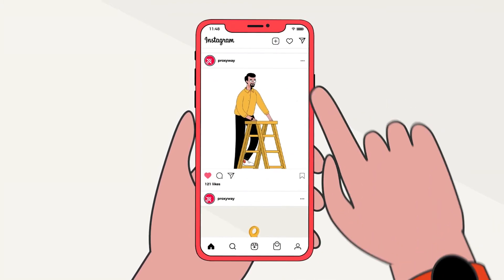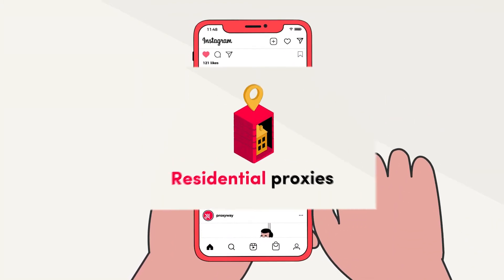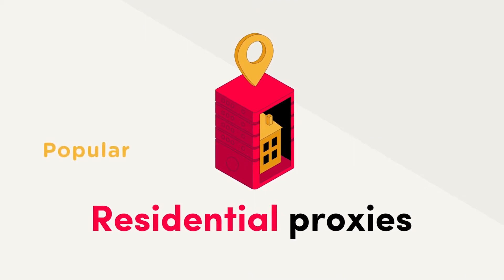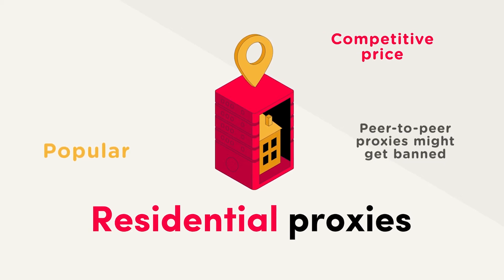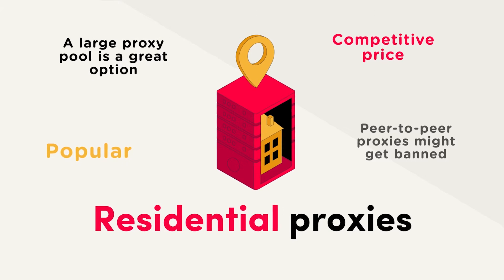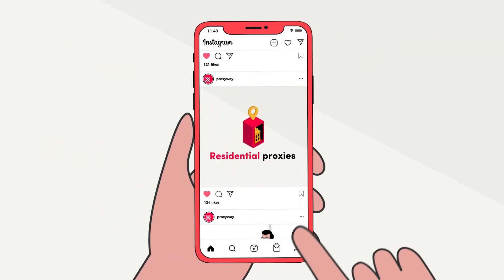The best budget option for Instagram automation and scraping is residential proxies. They are a more common type of proxies — many providers offer them, and therefore the price is much more competitive. If your provider sells peer-to-peer residential proxies where all users share the same pool, it's much harder to ensure that the IPs won't get banned. Still, with networks spanning millions of residential IP addresses, the odds are pretty good for you.